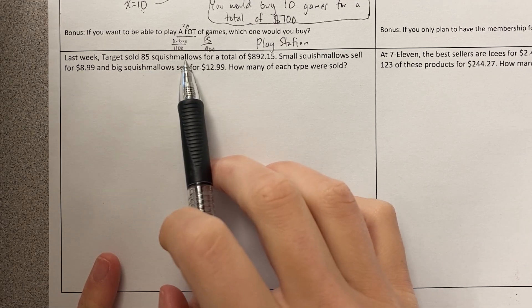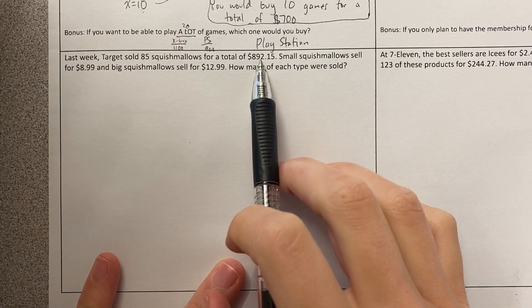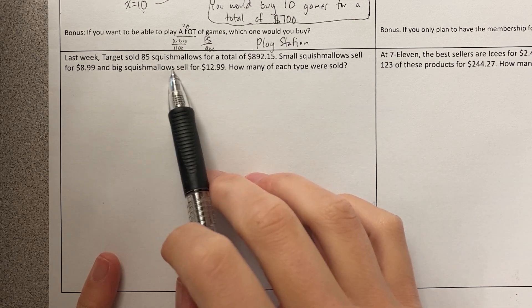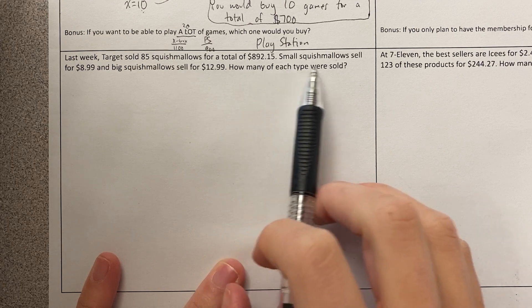Last week, Target sold 85 Squishmallows for a total of $892.15. Small Squishmallows sell for $8.99 and big Squishmallows sell for $12.99. How much of each type were sold?